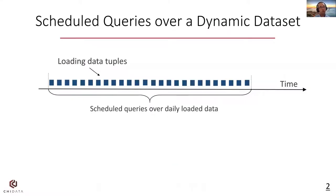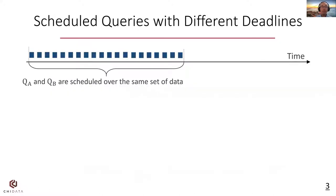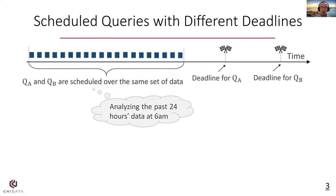Scheduled queries over a stream of tuples are present in today's database applications, such as maintaining dashboard reports for daily loaded data and regular ETL jobs. In many cases, scheduled queries are querying the same set of data, like analyzing the past 24 hours of data at 6 a.m. But they have different deadlines, like QA needs to generate reports at 7 a.m., but QB's deadline is at a later time.